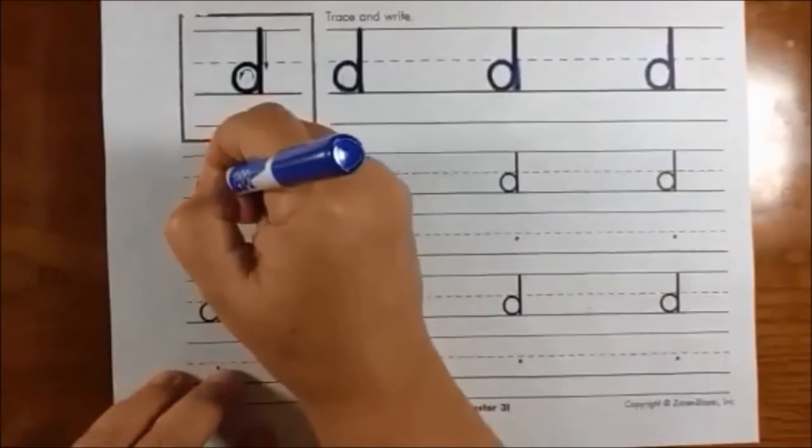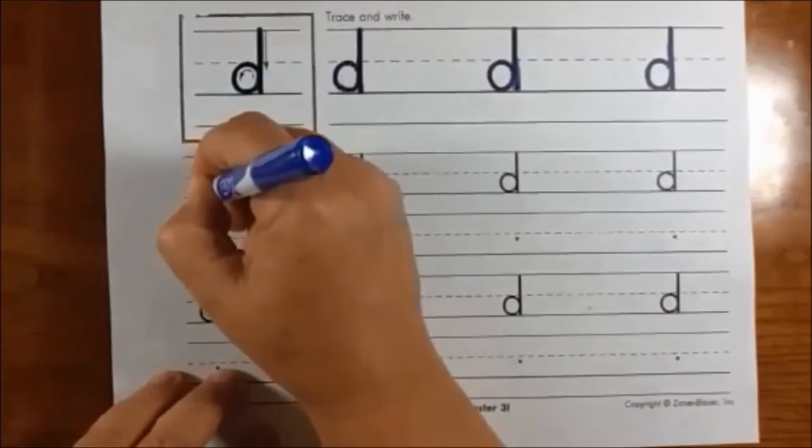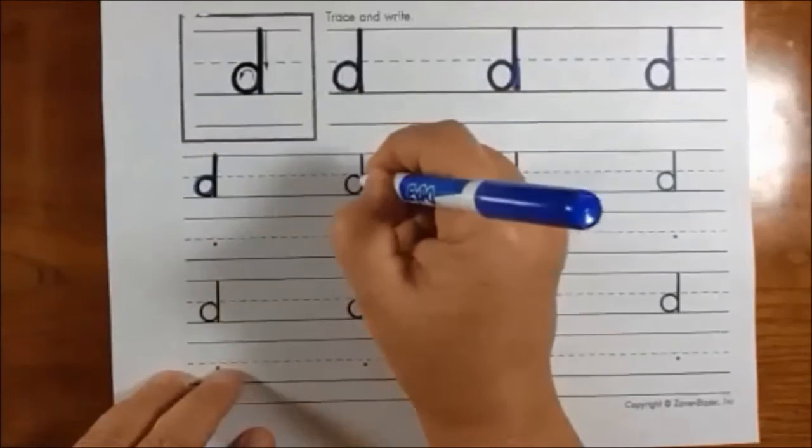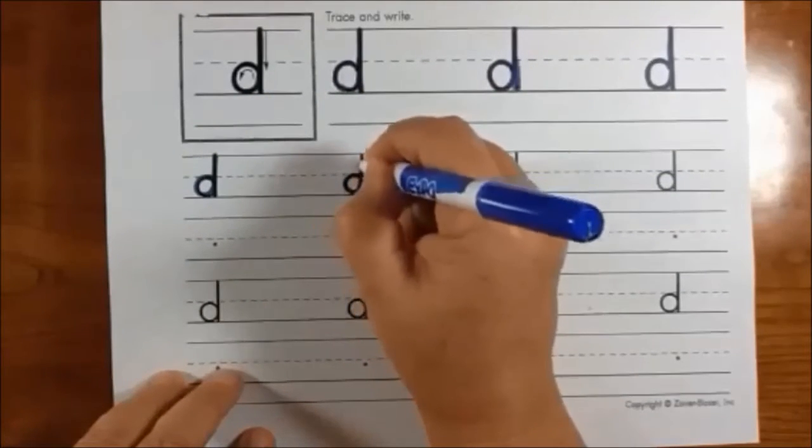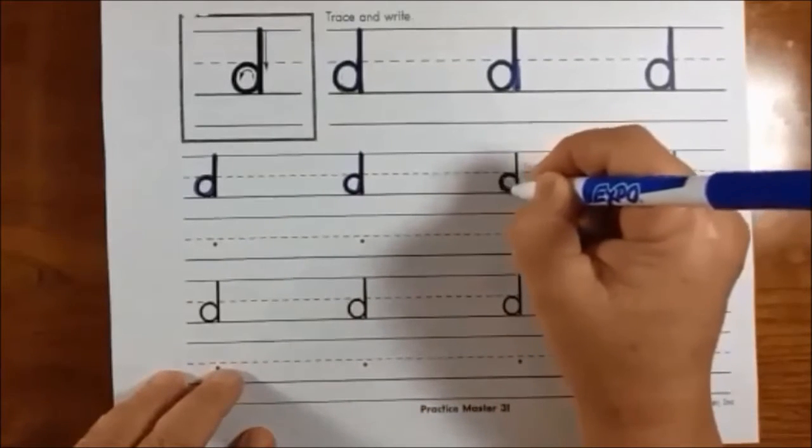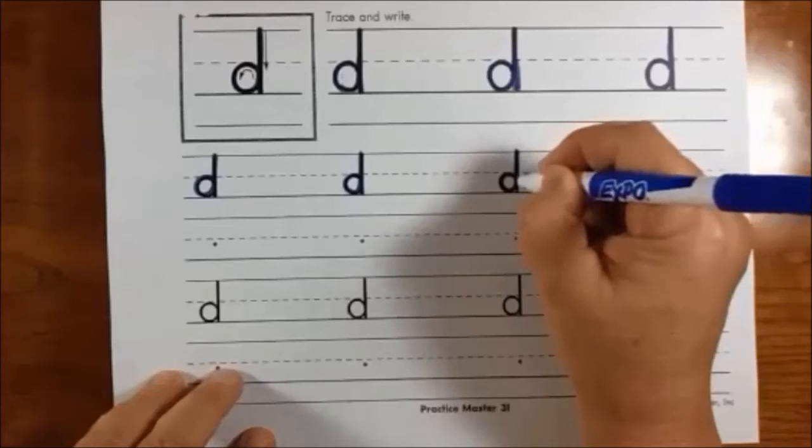Let's try some smaller ones. Over, around, up, down. Over, around, up, down. Over, around, up, down.